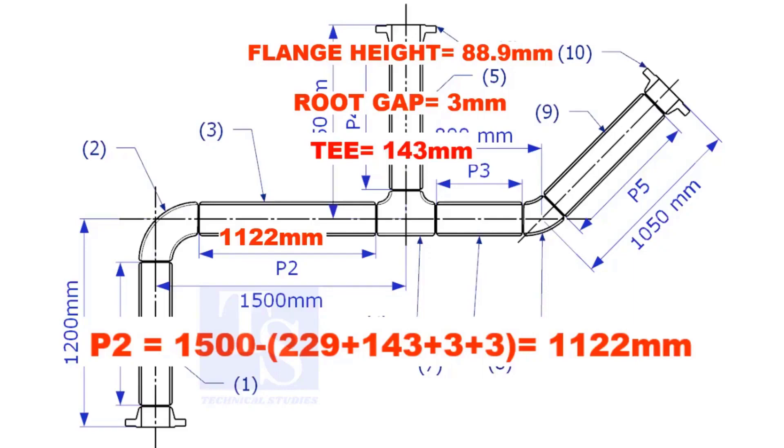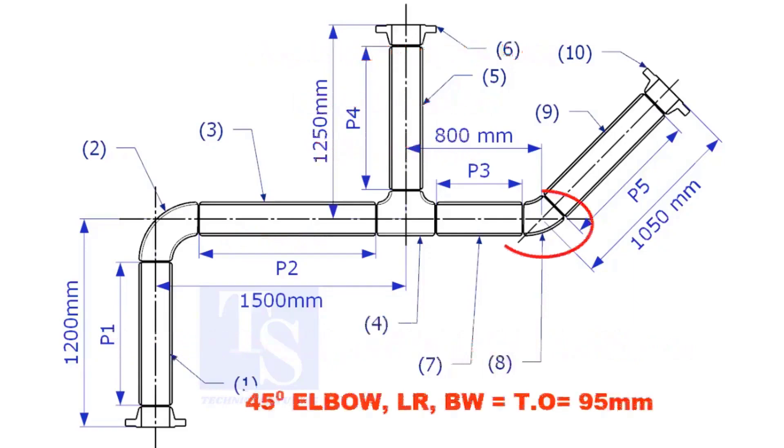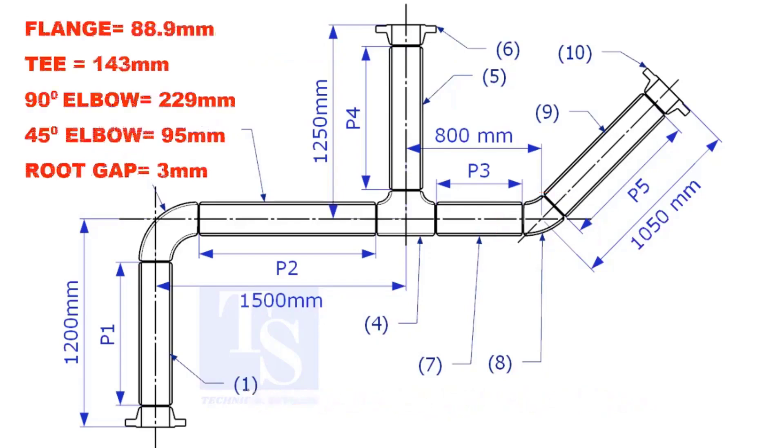The length of item number 3 is 1122mm. Takeoff length of the 45 degree elbow is 95mm. The length of pipe P3, P4, and P5 are given.